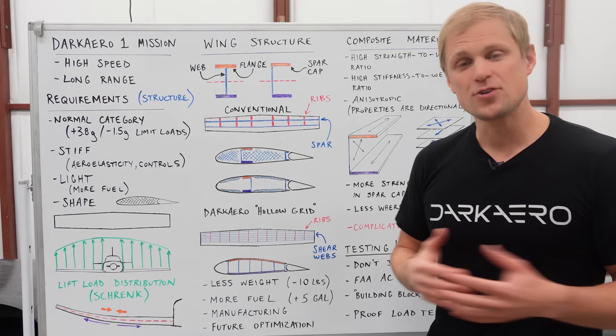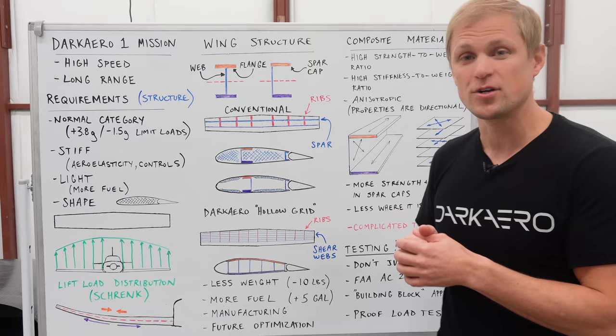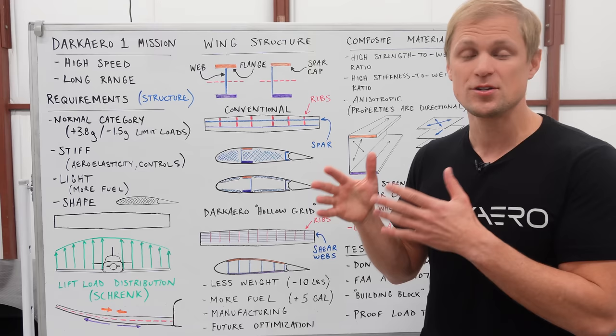It also has anisotropic mechanical properties, meaning that the properties are directional and the strength and stiffness of the structure is aligned with the orientation of fibers in the structure. And we can use this property to create structures that are optimized and tuned to withstand the loads that are applied to them.